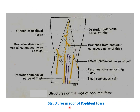In the diagram we can see the structures in the roof: the posterior cutaneous nerve of thigh, the posterior division of medial cutaneous nerve of thigh, the lateral cutaneous nerve of the lateral side of the calf, the peroneal communicating nerve, branches from the posterior cutaneous nerve of thigh, and the small saphenous vein.